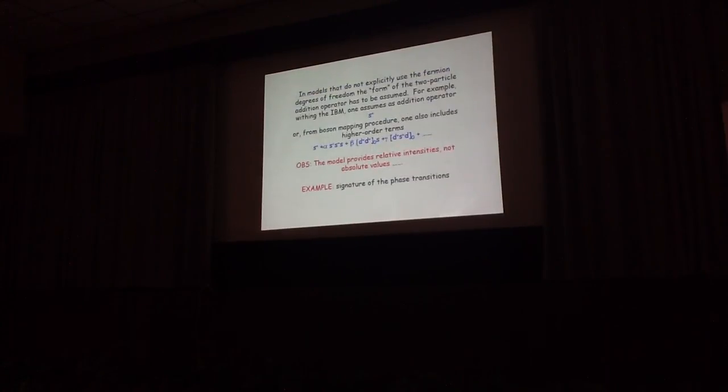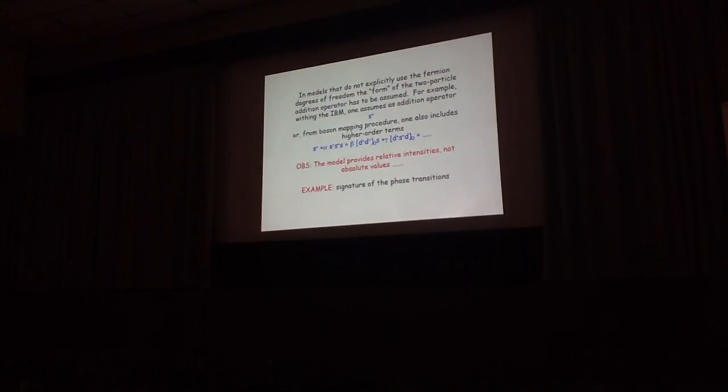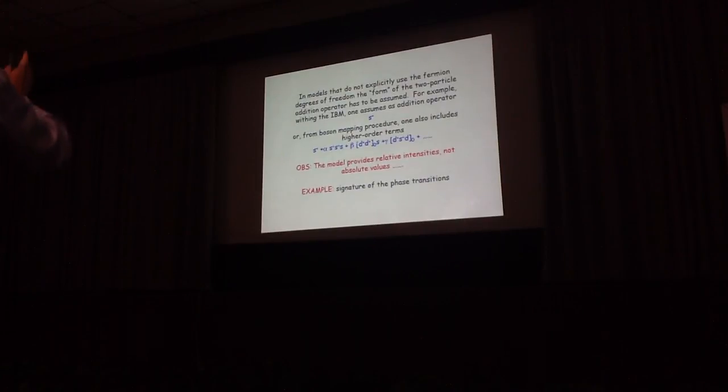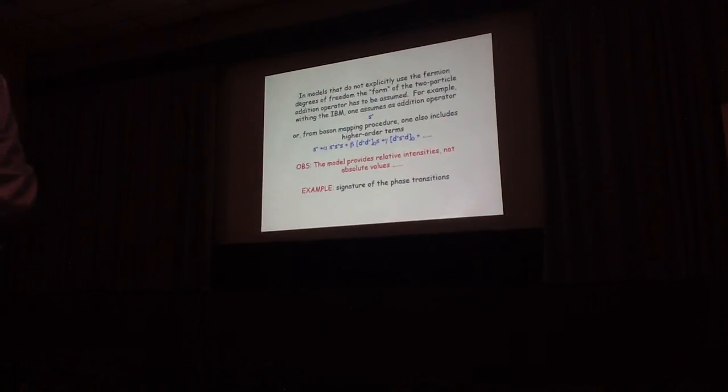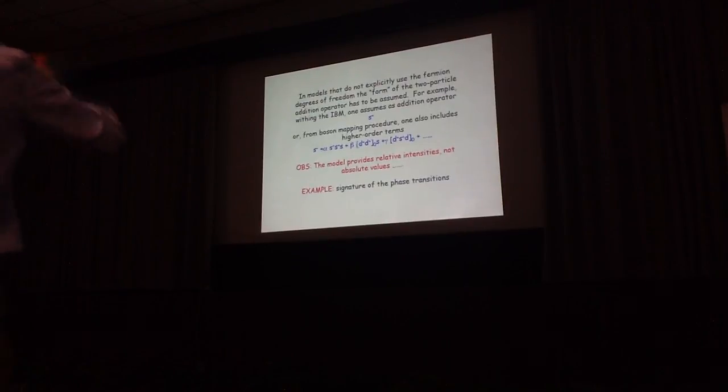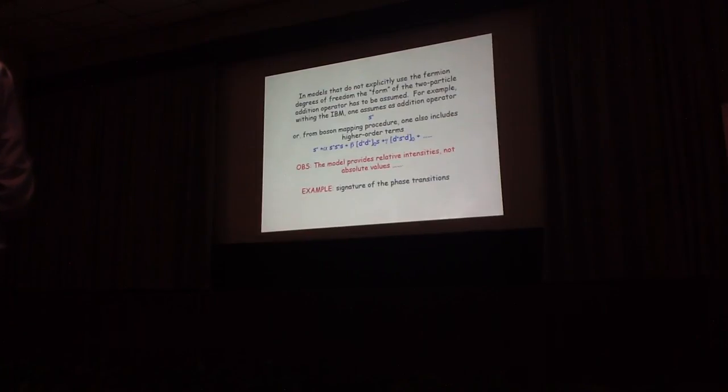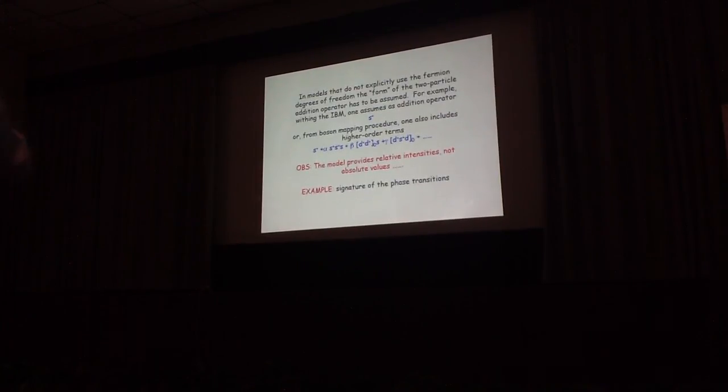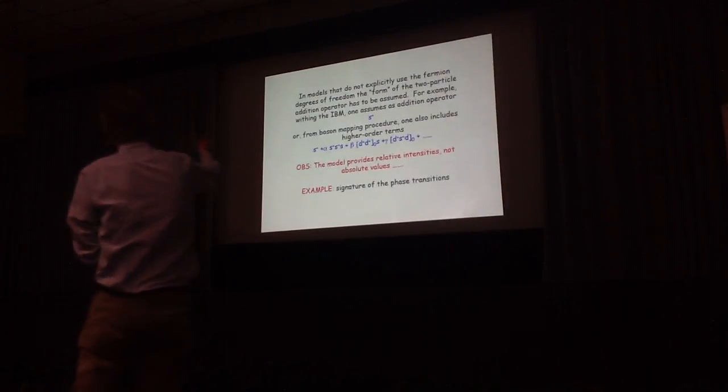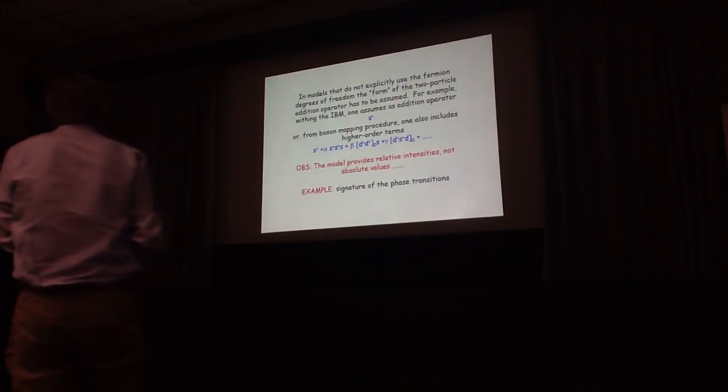The same thing, the thing is even more complicated in the case of models that do not explicitly contain the fermion degrees of freedom. For example, within the IBM, you have to find a mapping procedure between your fermion dagger-dagger operator and a certain form of boson operator.